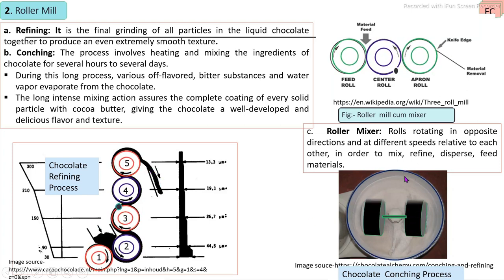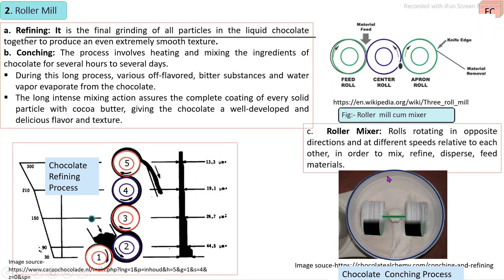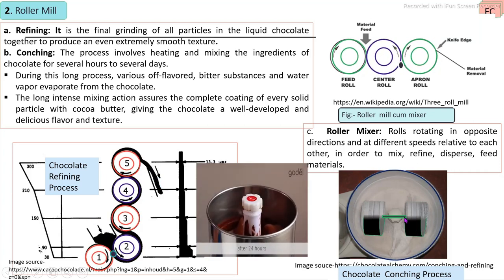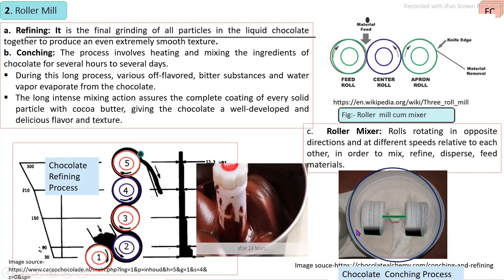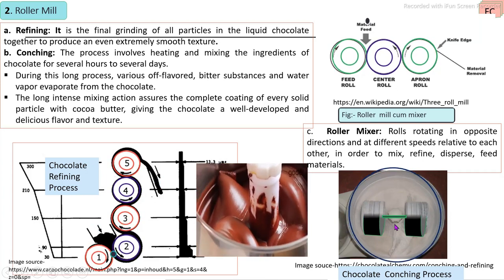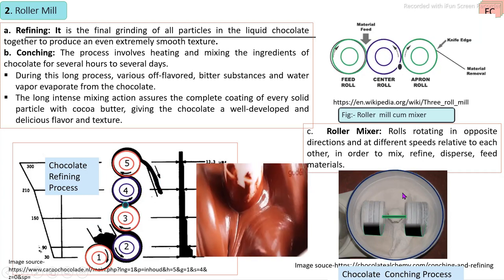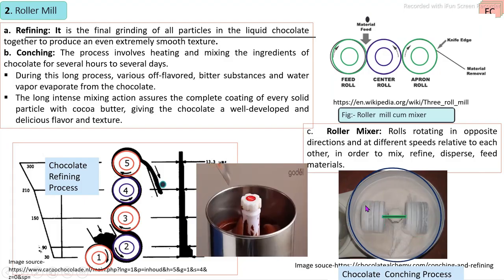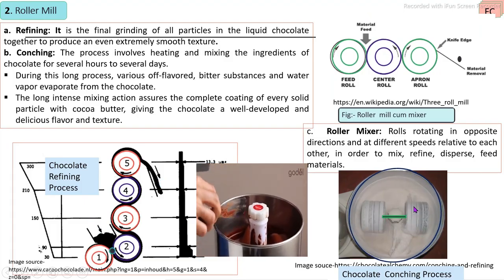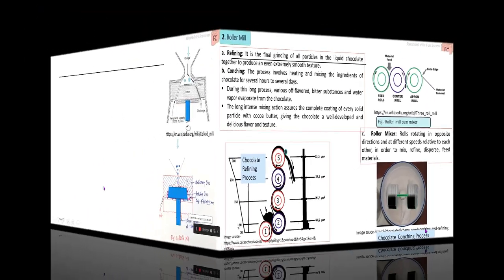In the conching process, a pan rotates with two rollers inside that also rotate. Paste-like materials placed in the rotating pan undergo size reduction and mixing unit operations simultaneously.